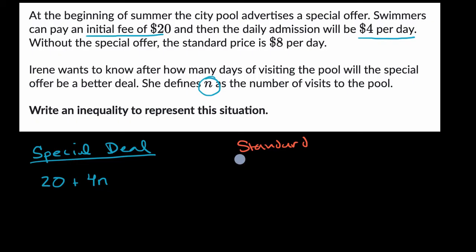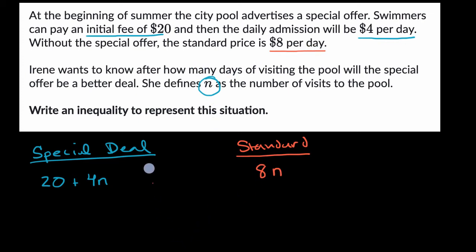Now in the standard scenario, she doesn't pay any money upfront. Without the special offer, the standard price is $8 per day, so that's just going to be 8 times the number of days. And what we want is an inequality to represent after how many days of visiting the pool will the special offer be a better deal?